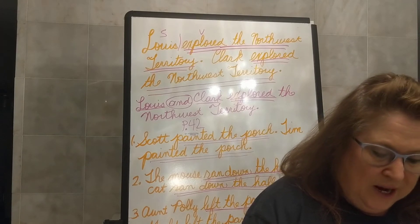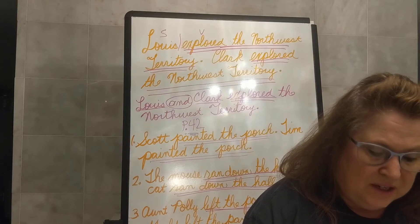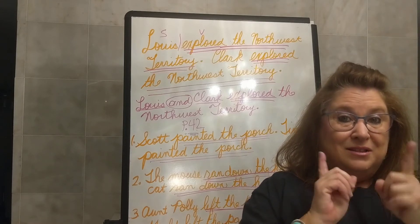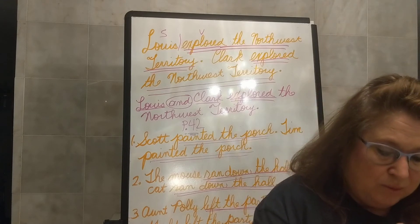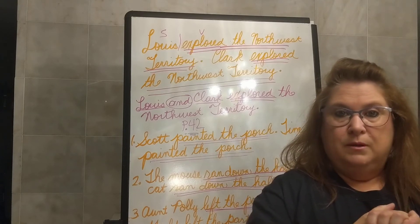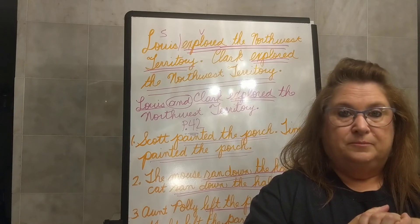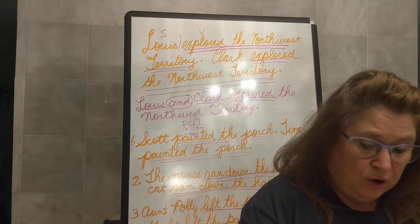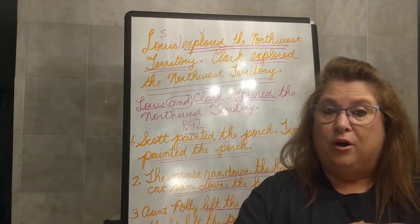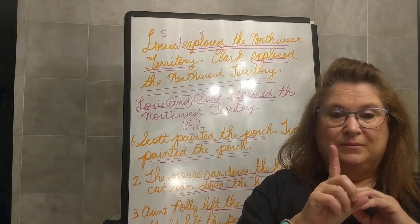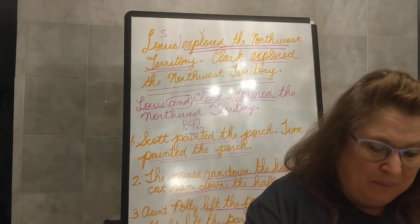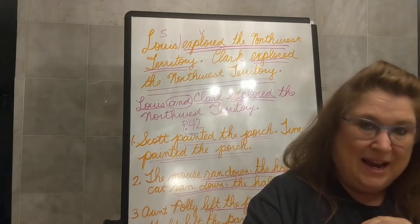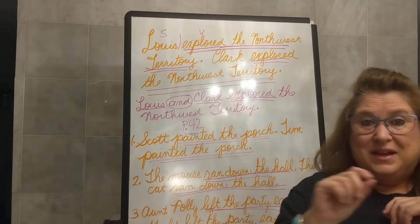Number two: The farmer and the airplane pilot are especially concerned with the weather. Don't let this one trick you. What's our verb? Always and forever a verb on your verb list. Are. Are is our verb. And then who or what are — one word: pilot. You would see farmer and airplane and automatically want to underline that as your subject.